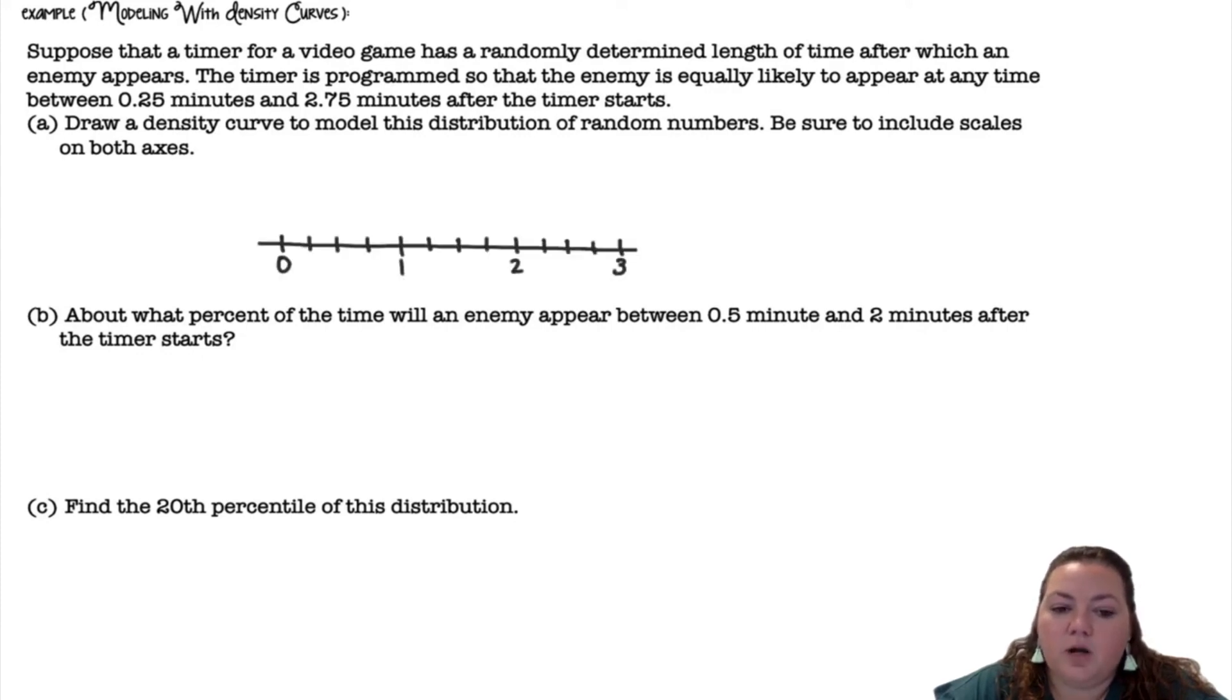So we're going to go from 0 minutes to 3 minutes counting by quarters. This will be the length of time for the enemy to appear in minutes. It's going from 0.25 to 2.75 so I'm going to draw a line above there. It's equally likely so I'm just making it a flat line.